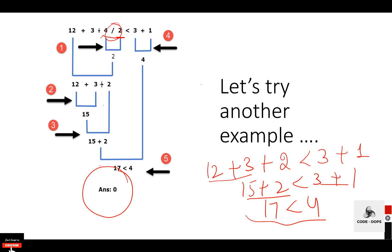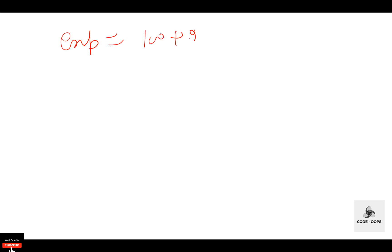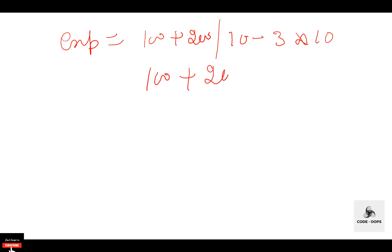Another example: exp = 100 + 200 / 10 - 3 * 10. Here we have four operators where slash and multiply have the same precedence but higher precedence than plus and minus. According to left-to-right associativity of slash and multiply, slash is evaluated first: 200 / 10 = 20. The expression becomes 100 + 20 - 3 * 10. Then multiply: 3 * 10 = 30. Expression is now 100 + 20 - 30.